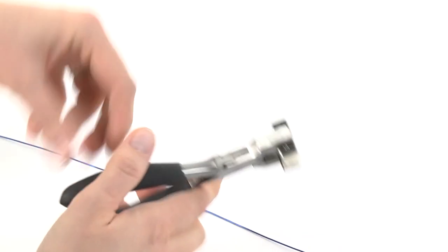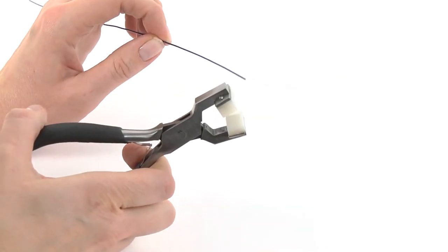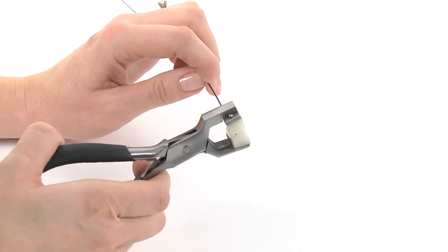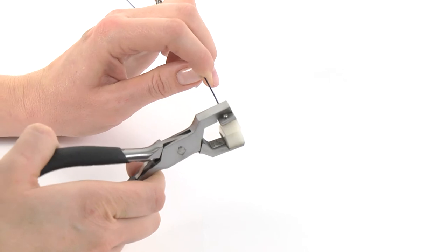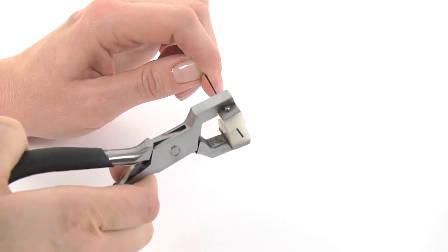I'm going to demonstrate with a one millimeter piece of wire. All you do is insert the wire into the jaws of the pliers and then gently start squeezing. Then move it along and continue to squeeze along the length of the wire.